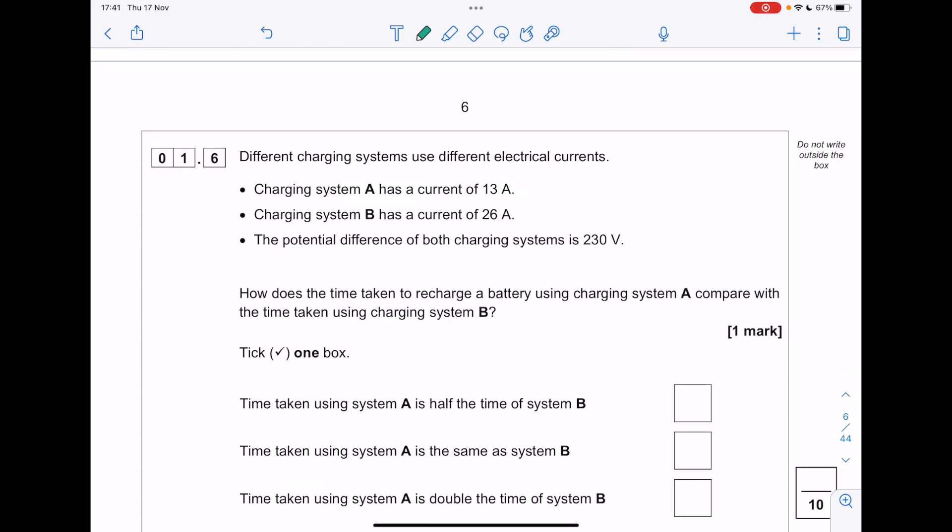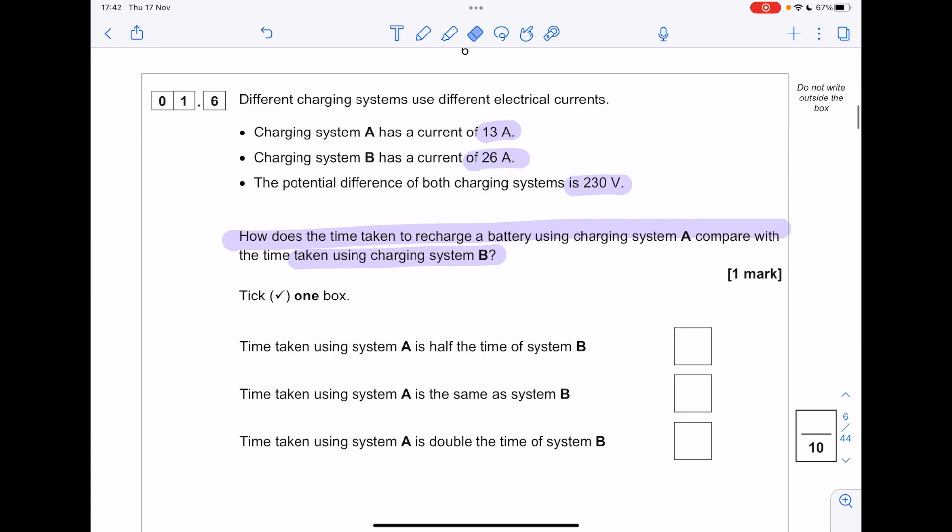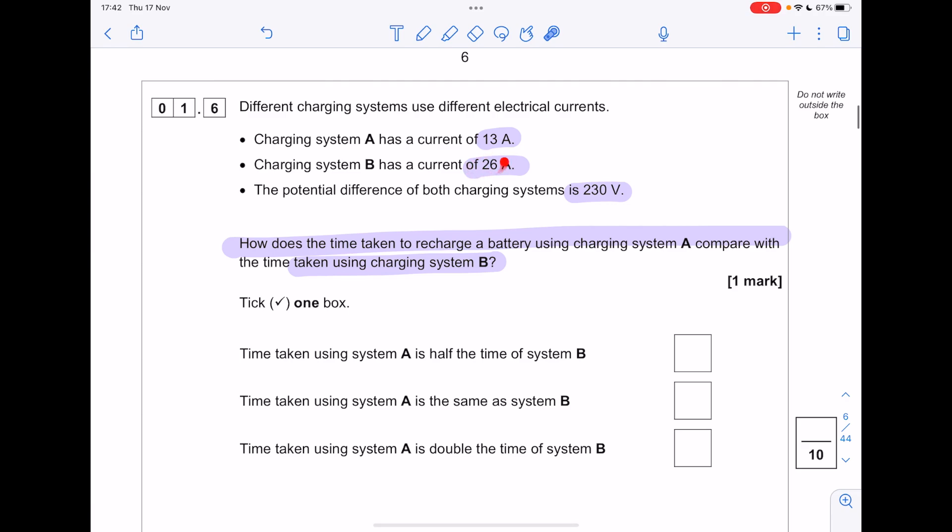Different charging systems use different electrical currents. Charging system A has a current of 13 amps, B has 26 amps. Both voltages are 230 volts. How does the time taken to recharge a battery using charging system A compare with B? Because charging system B has a much greater current, it will charge much more quickly. Because the current is twice as large going into B, it will take twice as long to charge A.